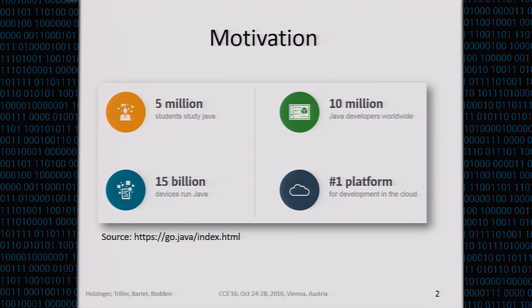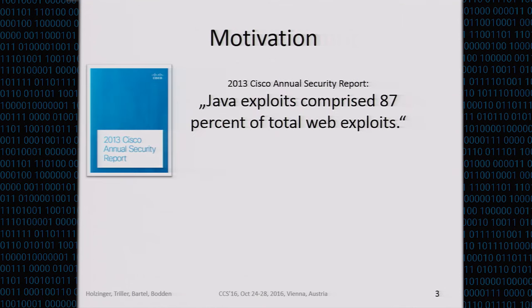Java has been around for like 20 years. It has been popularized in the mid-'90s, and based on the numbers provided by Oracle, I think it's safe to say that it's a story of success — it's one of the most widely deployed platforms of its kind today. At the same time, however, we also know that Java is one of the top attack vectors for criminals, and it has been that case for quite some time.